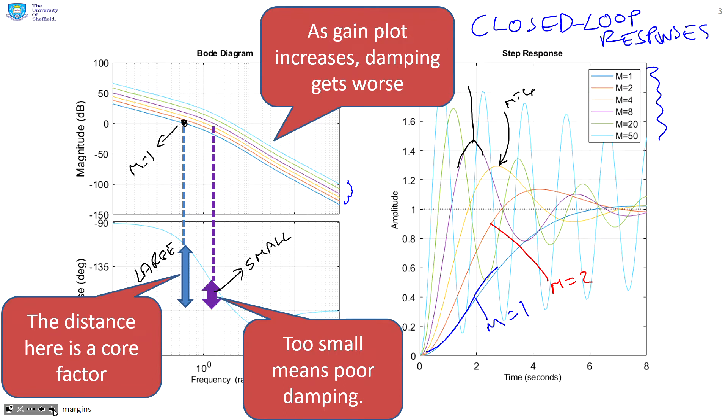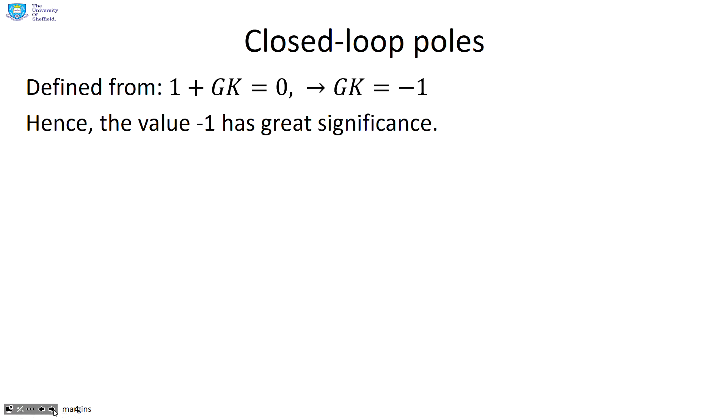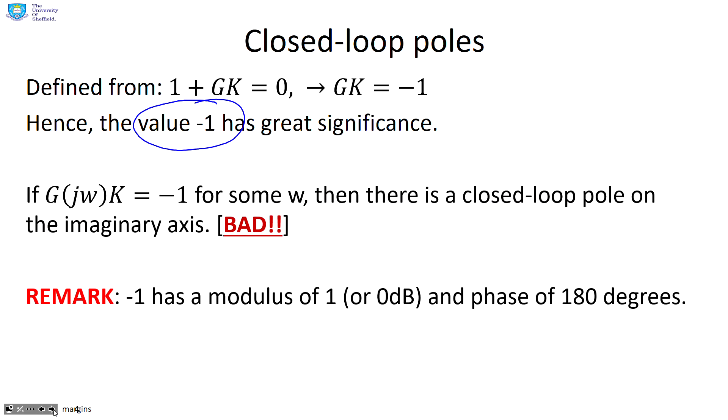I've not defined this precisely, but it's just an illustration of how I can look on the Bode diagram and very quickly infer what I expect to see in the closed loop behavior. Why is this? Closed loop poles are defined from 1 plus GK equals 0 or GK equals minus 1. Hence the key point, the value minus 1 is very significant. If I can solve G of jω K equals minus 1, it's telling me that one of my closed loop poles is on the imaginary axis. I've got oscillatory modes in my closed loop behavior, which is very, very bad.